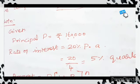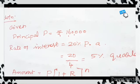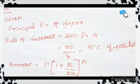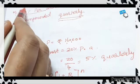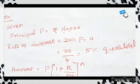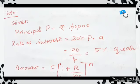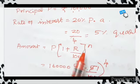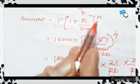First, what is the formula to find compound interest? Compound interest equals amount minus principal. To find the amount, the formula is P into 1 plus R by 100, the whole power N.